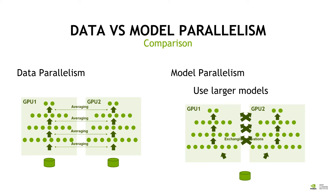Model parallelism does not give any decrease in execution time. The only way to get a decrease in execution time is data parallelism. In data parallelism, we really distribute the data. So here we have two different batches — one for every GPU. Every GPU has a copy of the model.